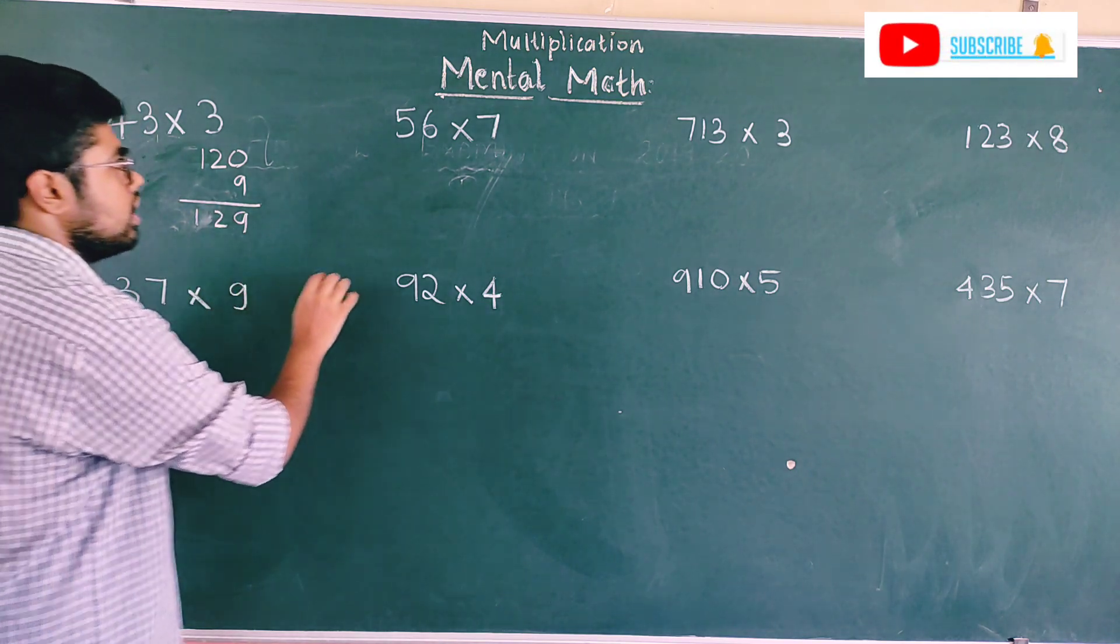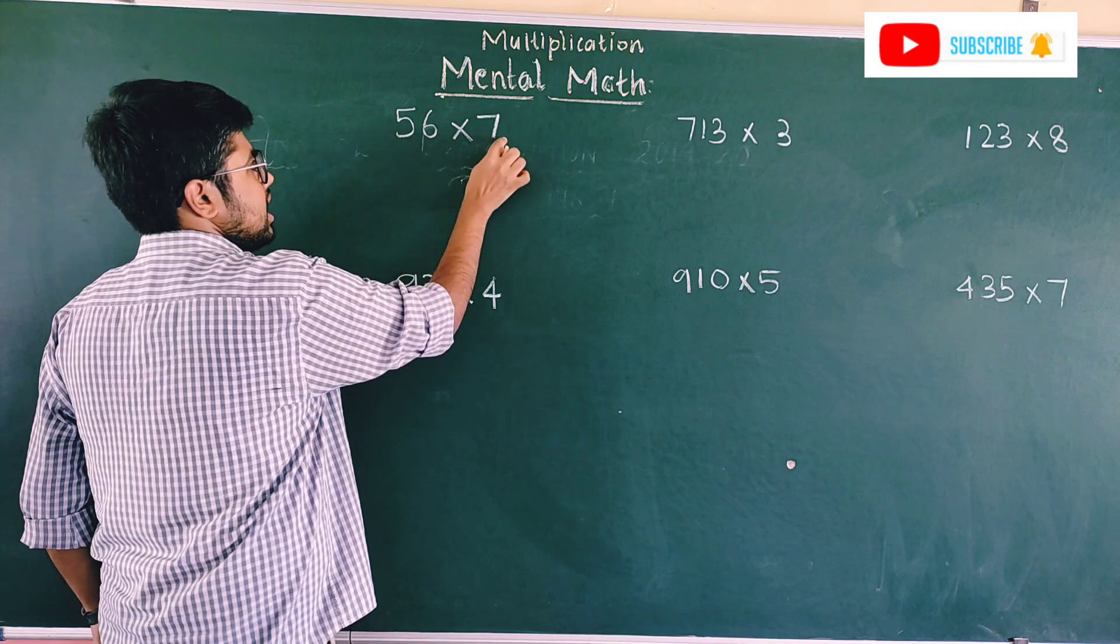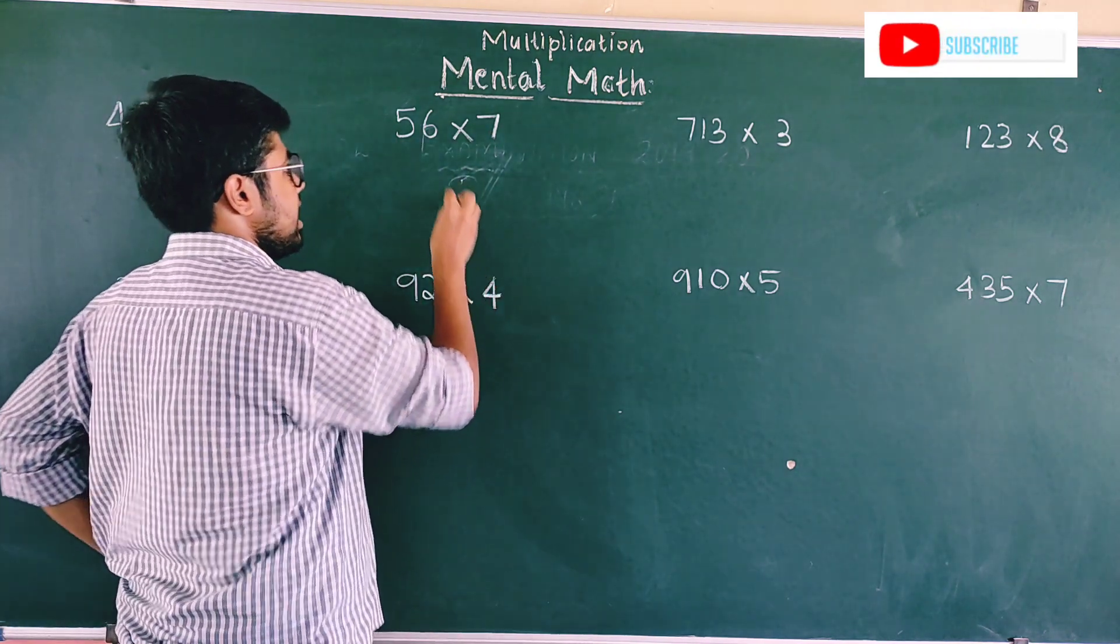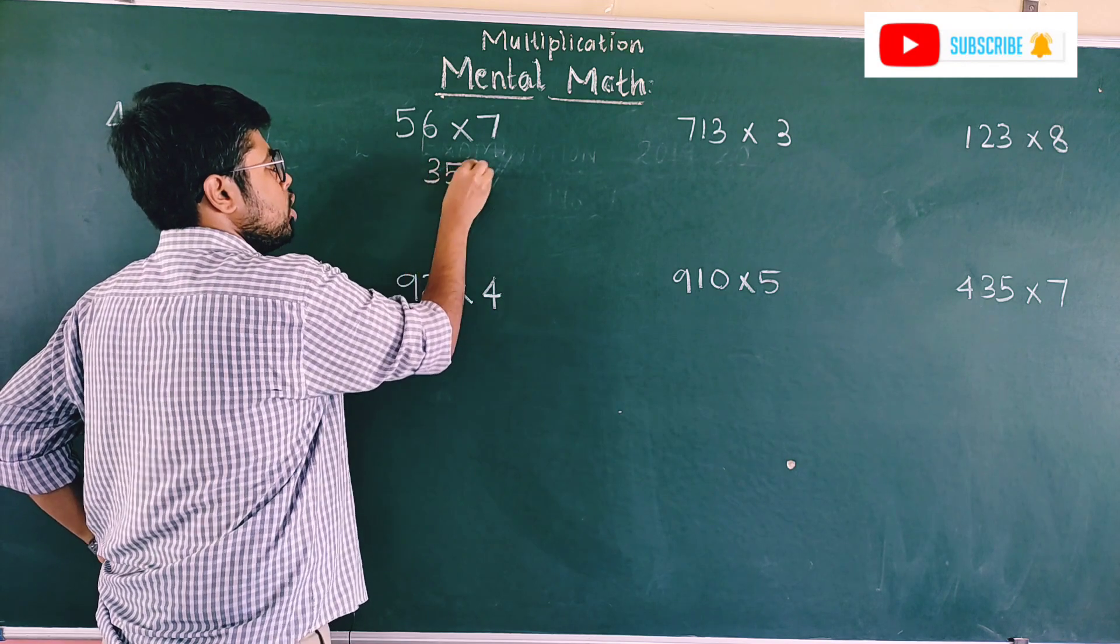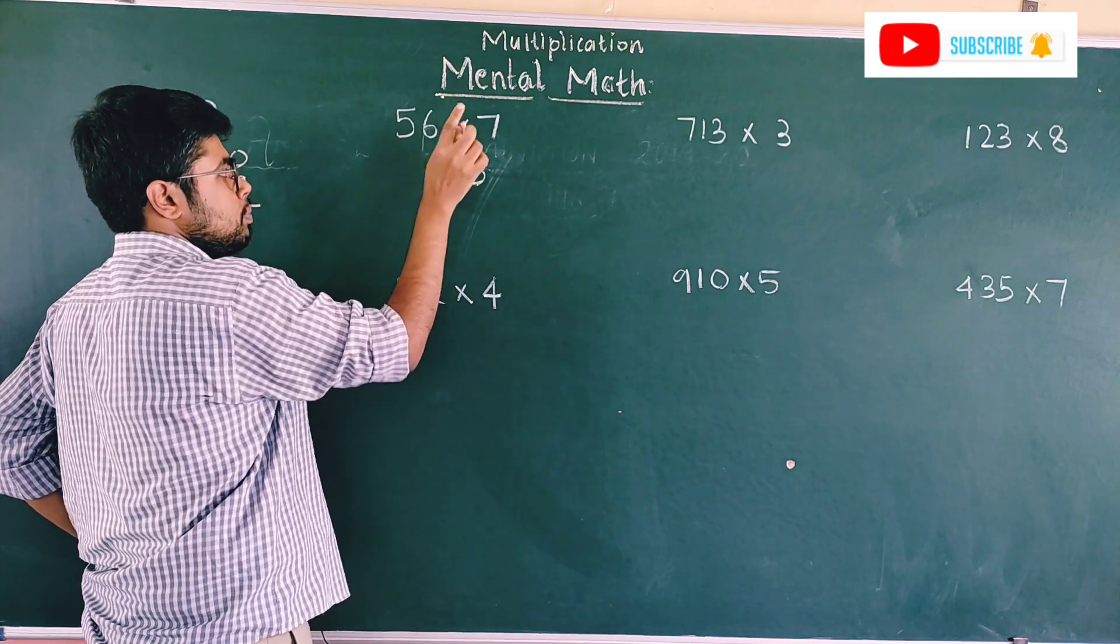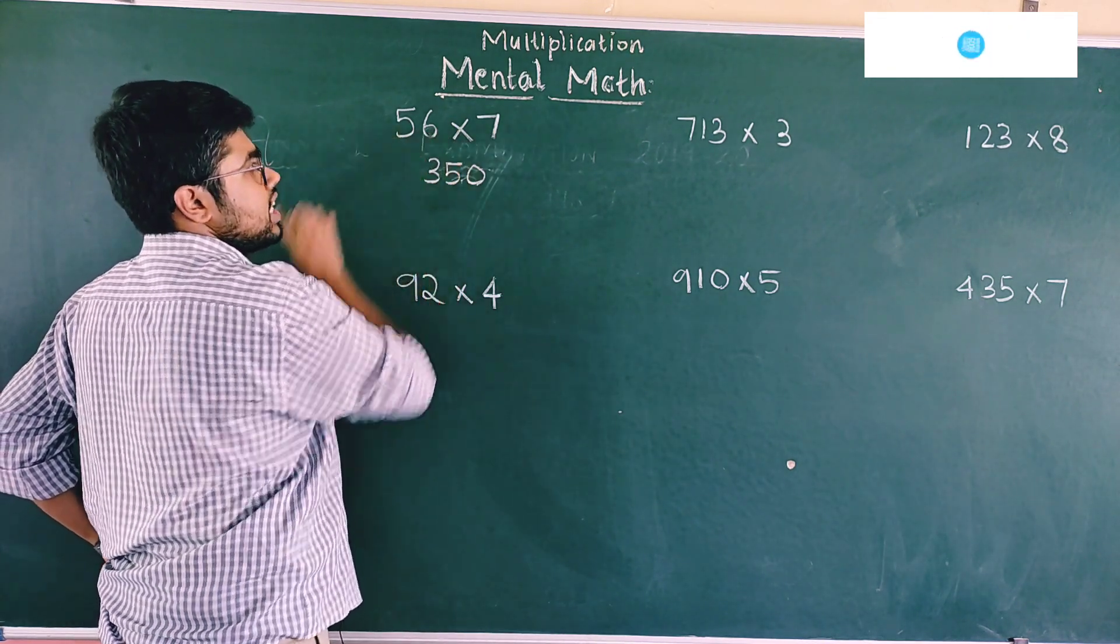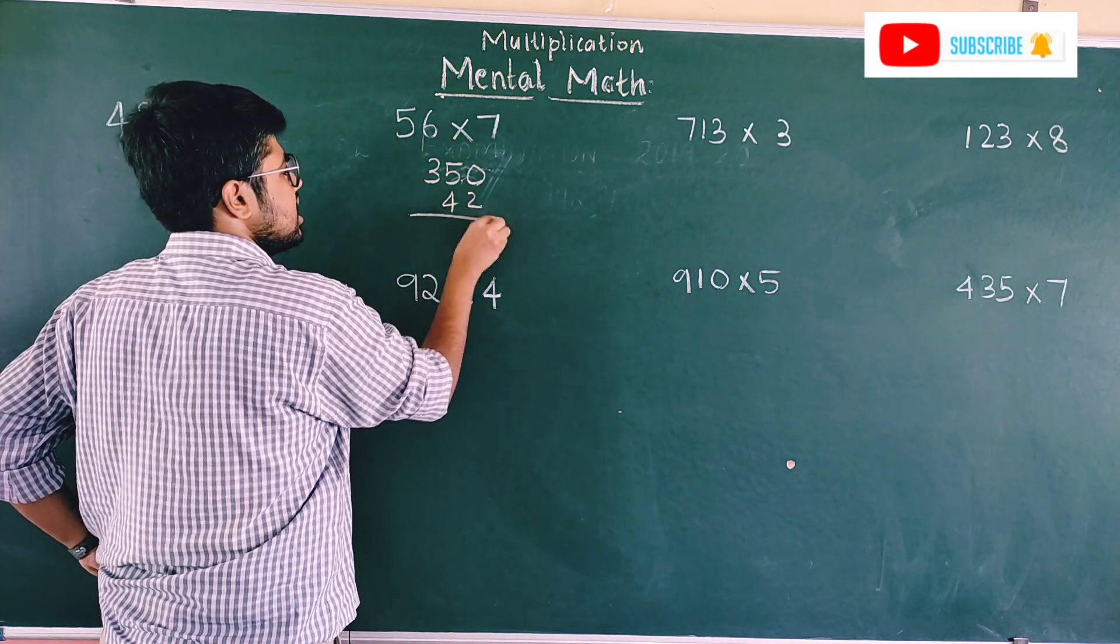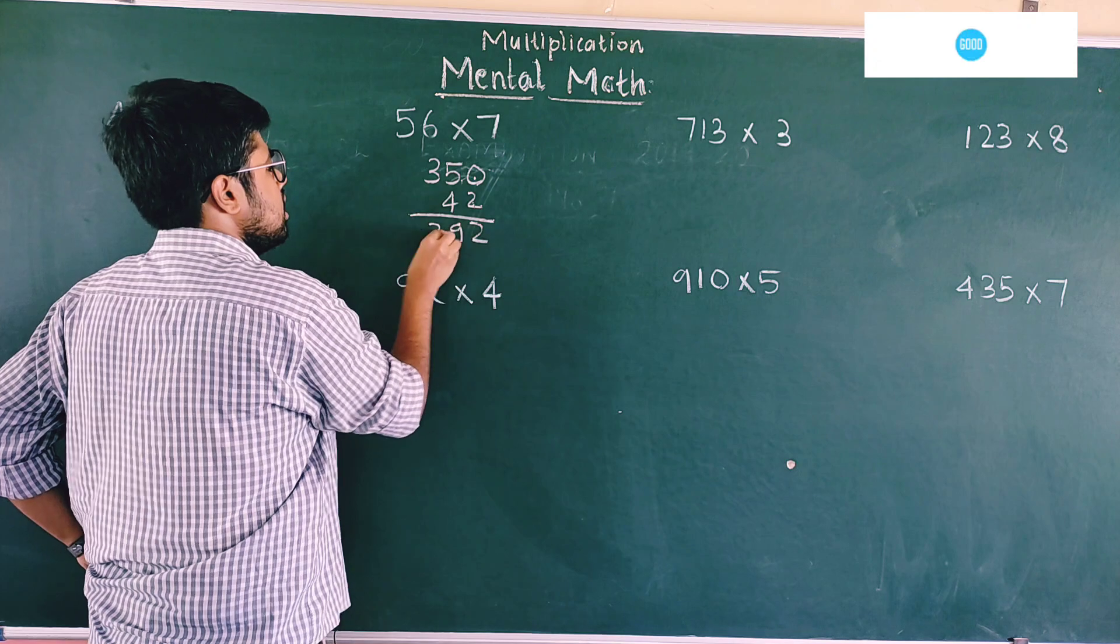Similarly for this, we'll do 56 times 7. What should you do? First multiply this and this. 5 times 7 is 35. Put 35 and put 1 zero because it's the tens place. Next, 7 times 6 is 42. Put 4 and 2. Then just add: 392 is the answer.